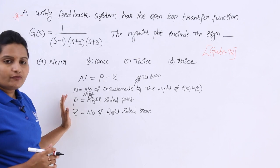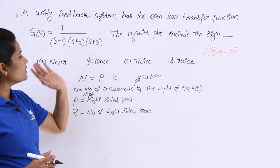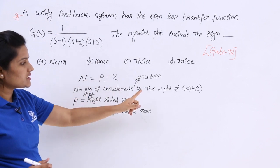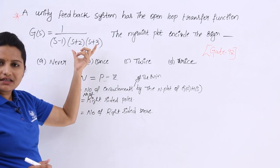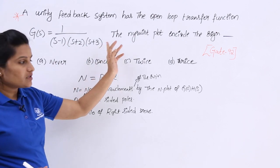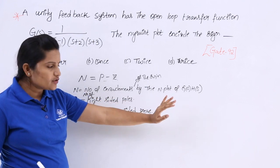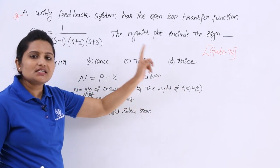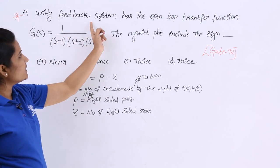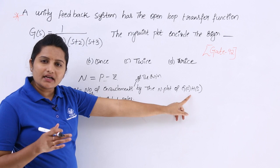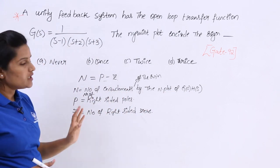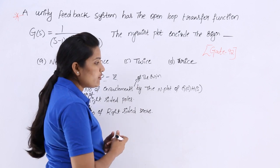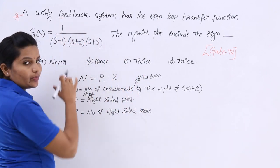Since this is a unity feedback system, H(s) = 1, so G(s)·H(s) = G(s). To find the poles, we equate the denominator of G(s) to zero, giving us s = 1, s = -2, and s = -3.